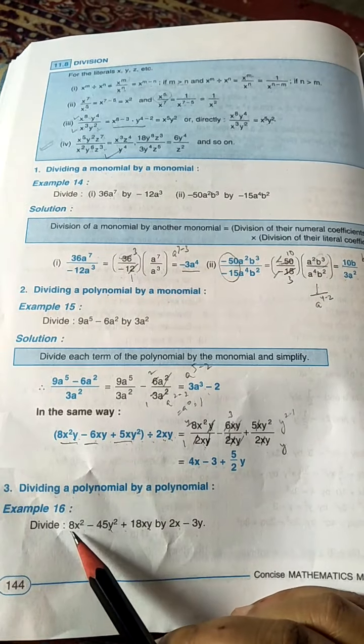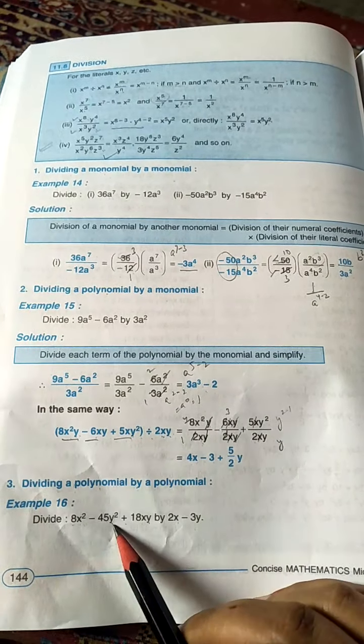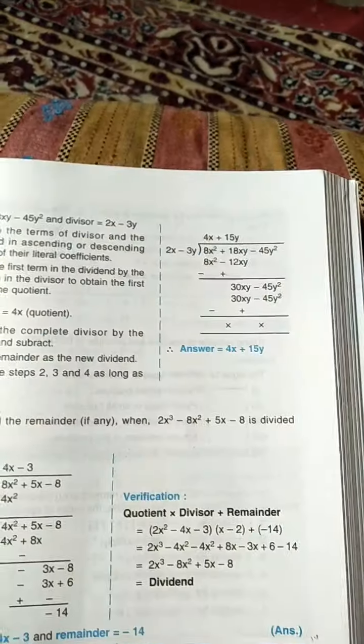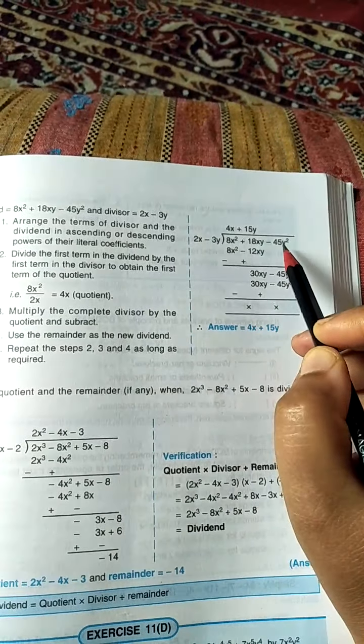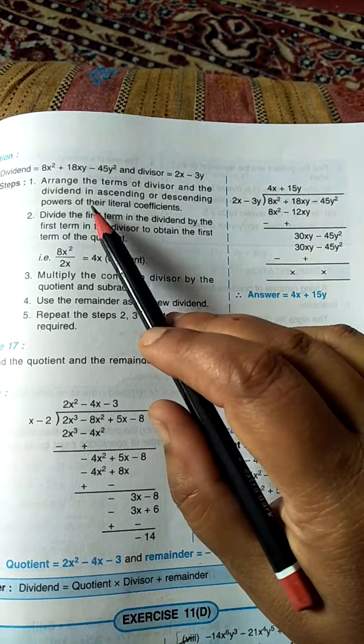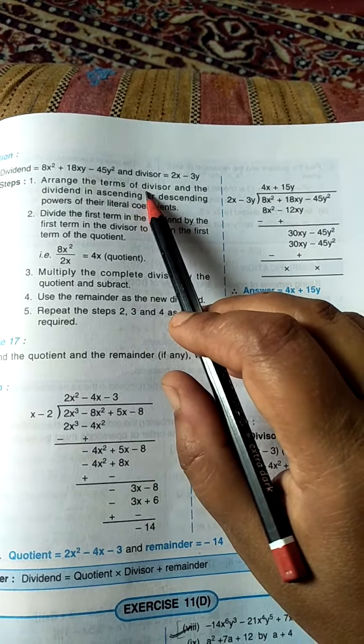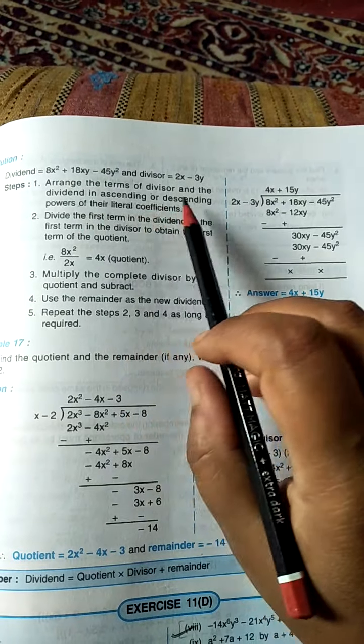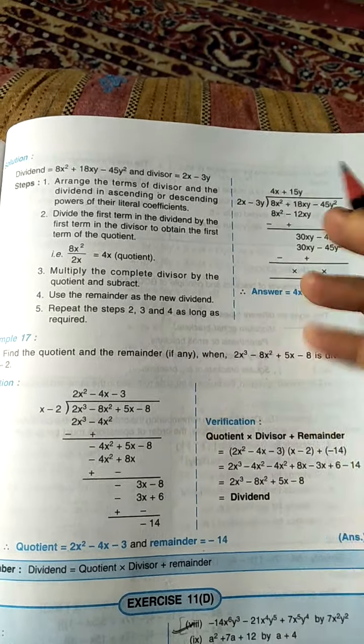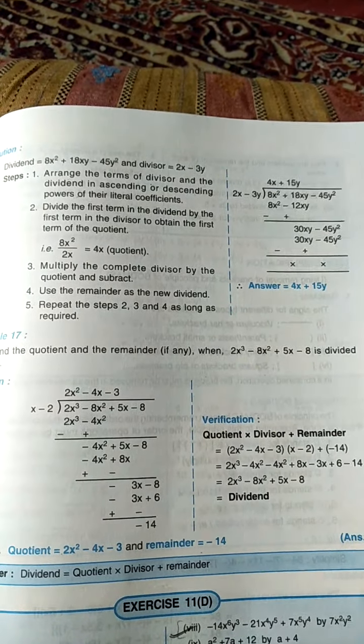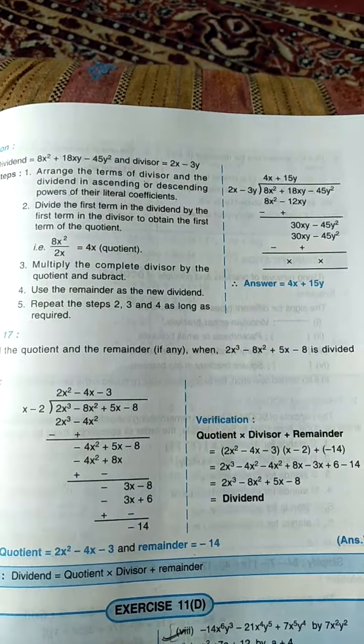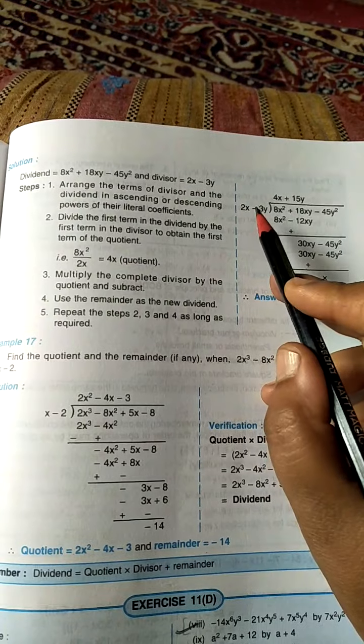Suppose it is given divide 8x square minus 45y square plus 18xy by 2x minus 3y. First you are going to write it like this in division format. Then arrange the terms of divisor and the dividend in ascending or descending powers of their literal coefficients. Arrange them in either ascending order or descending order of the powers of the variables, both in divisor as well as dividend.